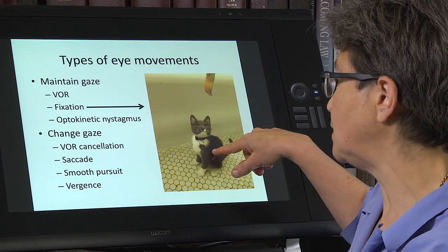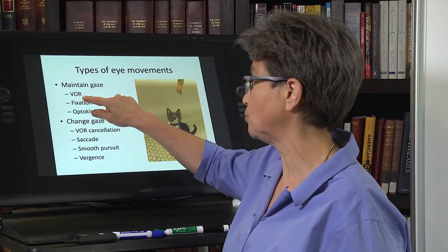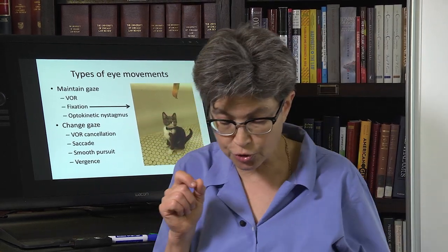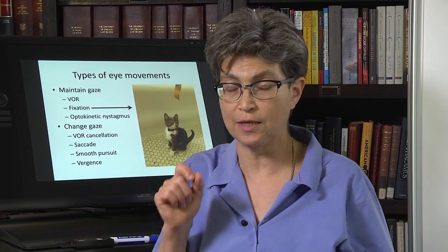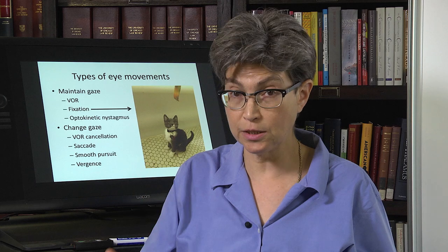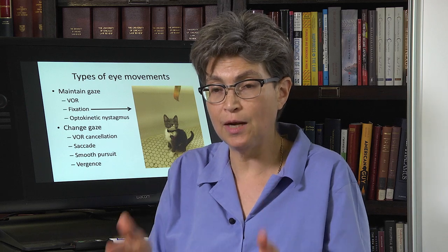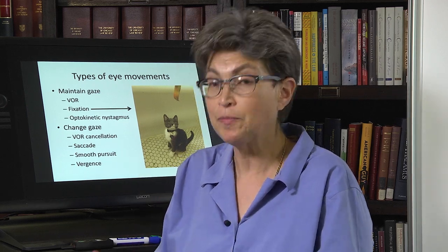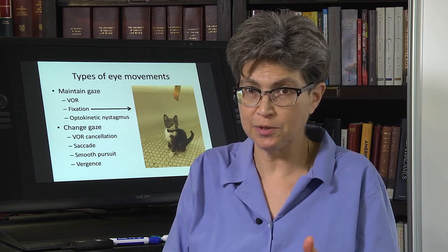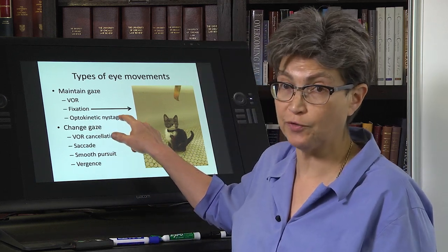Another way that we maintain gaze using eye movements is through the vestibular ocular reflex, and we're going to spend quite a bit of time on the vestibular ocular reflex. One of the ways that the vestibular system can have a motor consequence or motor deficit is through a nystagmus. Many forms of nystagmus are pathological, but there is one physiological form that is normal — and in fact a sign of health — and that is optokinetic nystagmus. We'll look briefly at that.